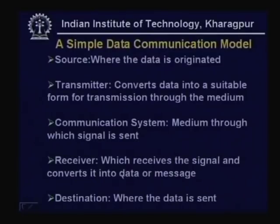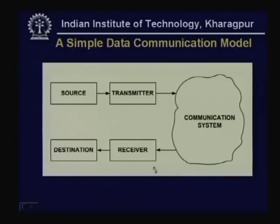Then comes the receiver, which receives the signal and converts it into data or message. The receiver will process the signal coming through the communication system and, after converting the signal into data, send it to the destination. The destination again can be a computer, peripherals, or communication equipment — the source and destination equipments can be of the same type.